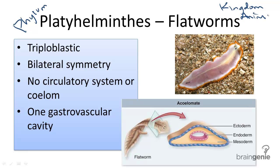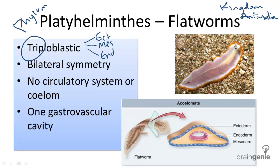Flatworms can be described by four main evolutionary features. One is that they are triploblastic, meaning there are three germ layers in early development: ectoderm, mesoderm, and endoderm.